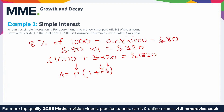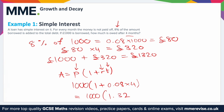Substituting those in, you get A equals 1,000 times (1 plus 0.08 times 4). Remember we need the rate as a decimal, so 0.08. Simplifying slightly: 0.08 times 4 is 0.32, so one plus 0.32 is 1.32.